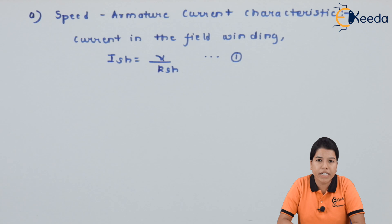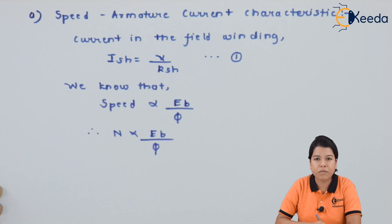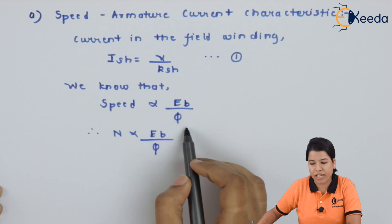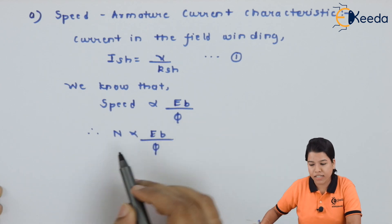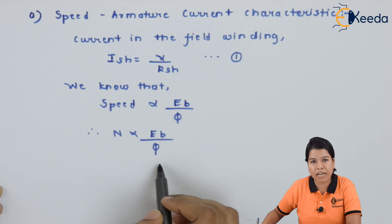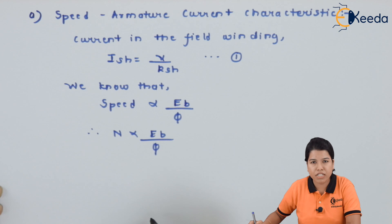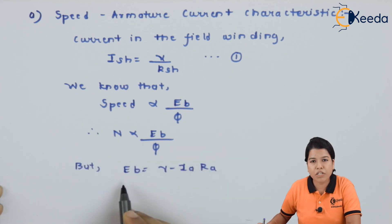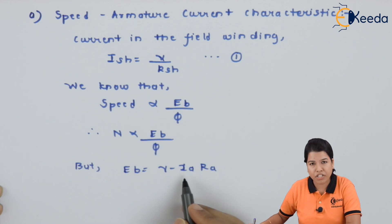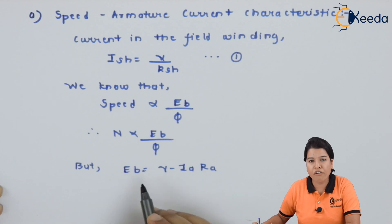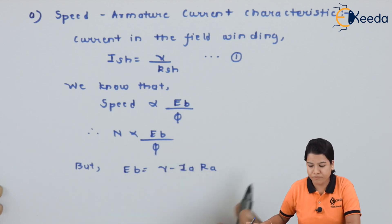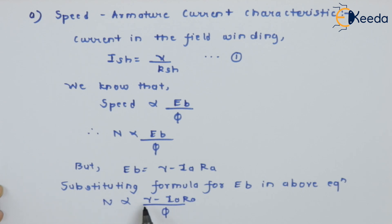We know that the speed is given by the equation: N is directly proportional to Eb / φ. The back EMF Eb is given by Eb = V − Ia·Ra, where Ia is the armature current and Ra is the armature resistance. Substituting this formula of Eb, we get N is directly proportional to (V − Ia·Ra) / φ.